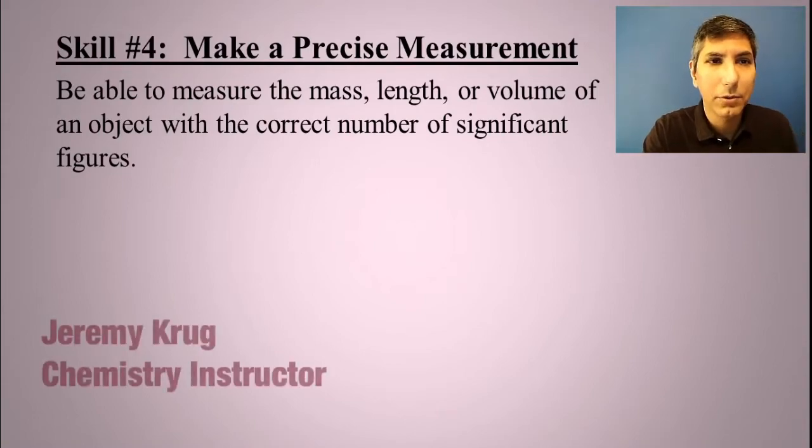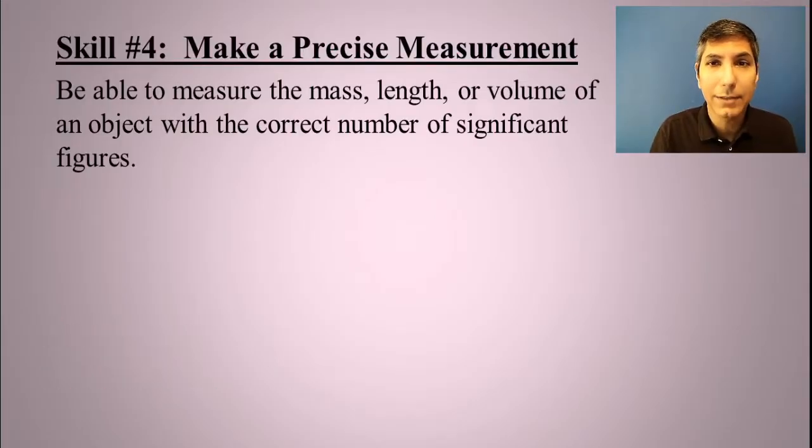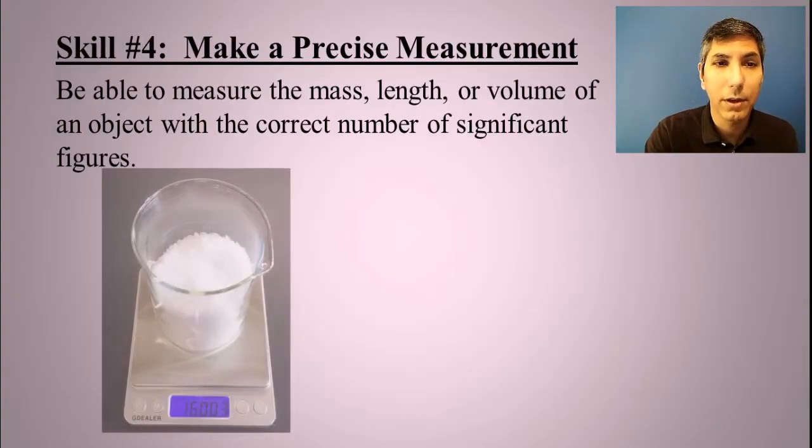A fourth basic skill for AP Chemistry is being able to make measurements in the laboratory. This means you're able to measure the mass or the length or the volume of an object using the correct number of significant figures.